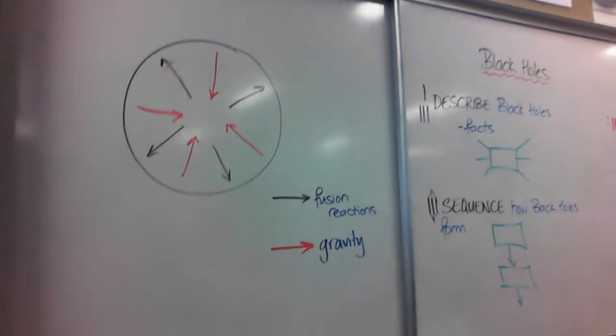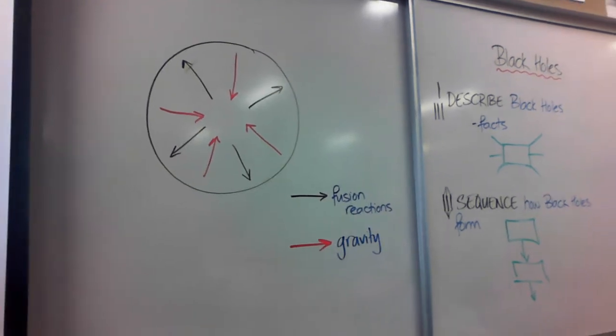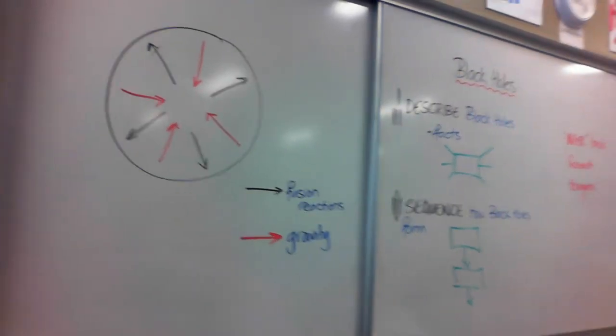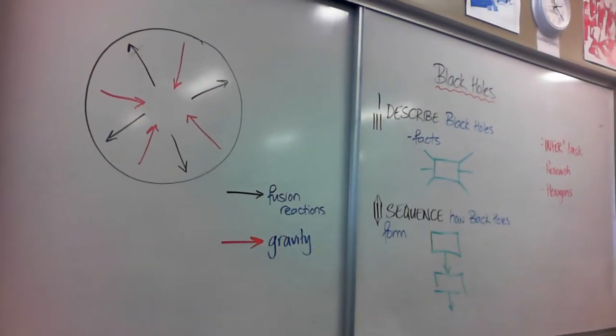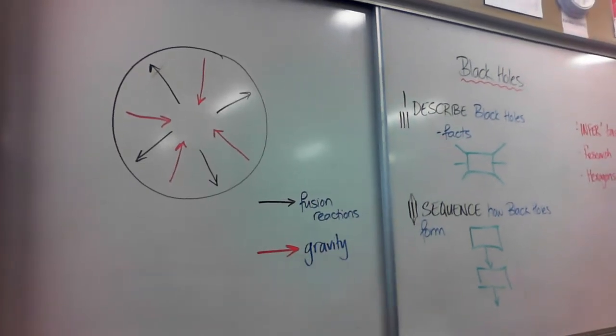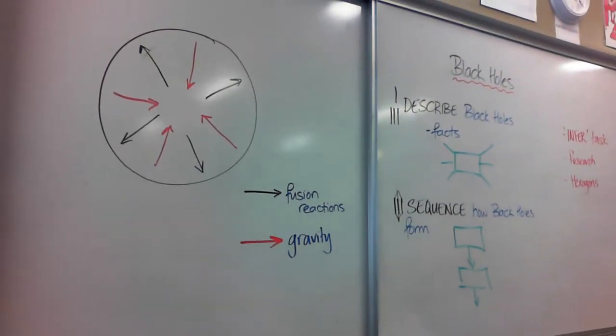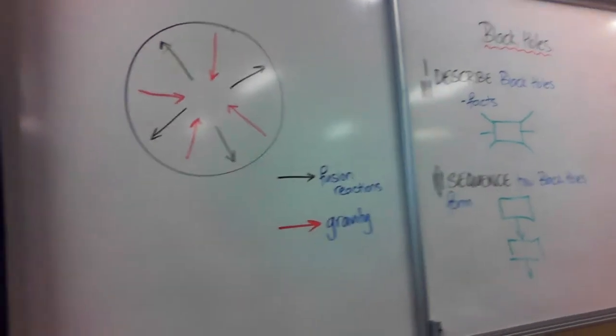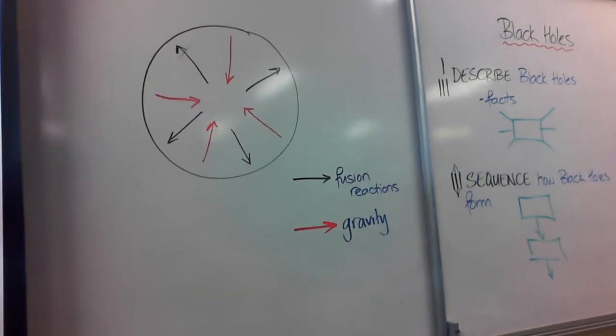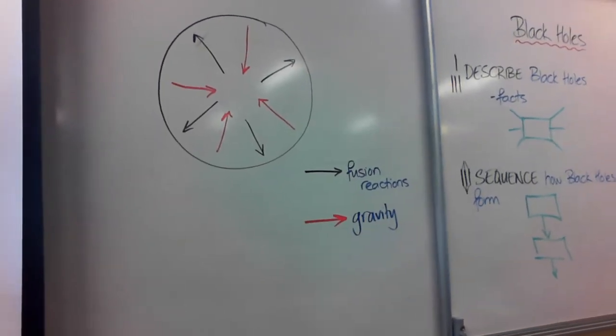If it wasn't for that outward pressure, the inward forces, the gravity of the star, would make that star collapse on itself. So what happens is when you've got a really big star, the pressure shown by the red arrows there is so big that once the star starts running out of fuel,